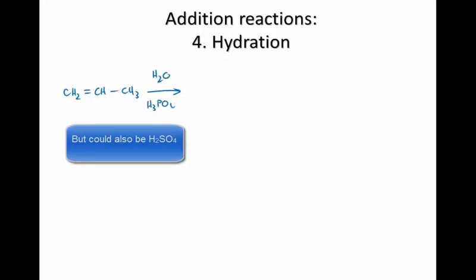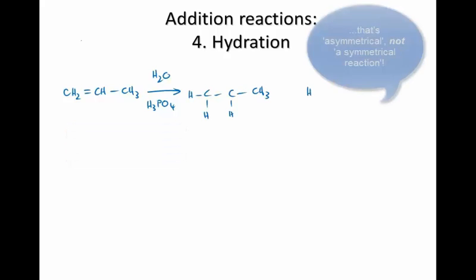So let's take the same examples that we had on the last slide. Propene plus water. And this also requires a catalyst to occur. The catalyst is usually phosphoric acid. And again, this addition reaction is asymmetrical.